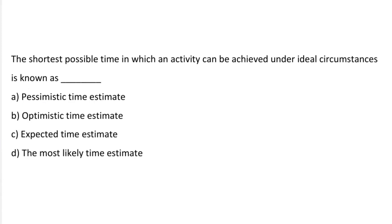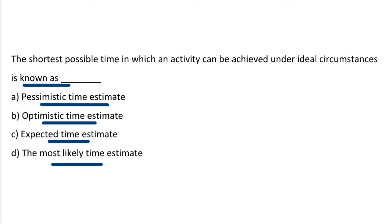Next question: the shortest possible time in which the activity can be achieved under ideal circumstances is known as — Option A: Pessimistic time estimate. Option B: Optimistic time estimate. Option C: Expected time estimate. Option D: Most likely time estimate. The correct answer is option B, Optimistic time estimate.